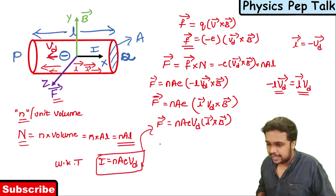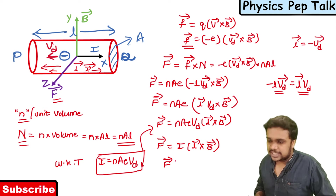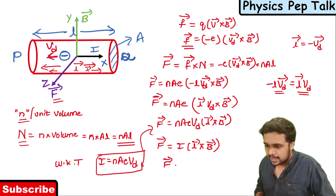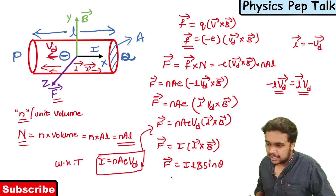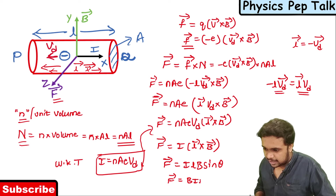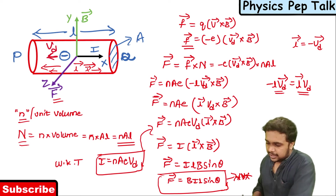Expanding the cross product, the total force experienced by the conductor is F equals I L B sine theta. This is also written as F equals B I L sine theta. This is the required expression for this derivation.